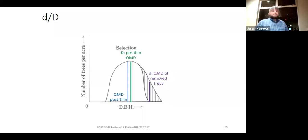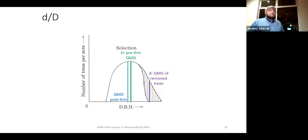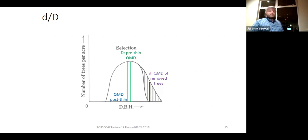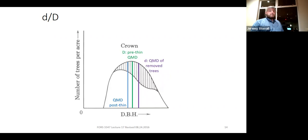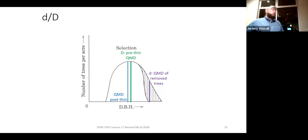Here's the selection thin. You remove the very largest trees in the stand — the cross-hatched area is way out to the right. It does something similar to a crown thin, but the lowercase-d-over-capital-D ratio for a selection thin is much larger than for a crown thin, because lowercase d is much larger. If you divide an even larger number by the same capital D, you get a larger outcome.